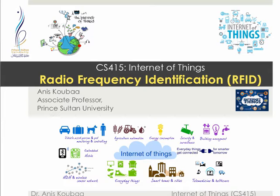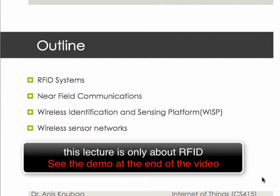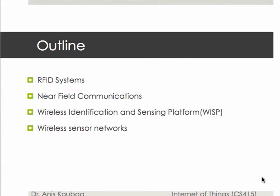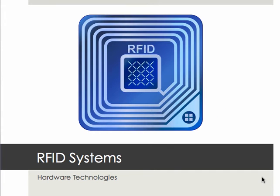In this lecture, I'm going to talk about the enabled technologies that have contributed to the emergence of the Internet of Things applications. I'm going to cover four major technologies: RFID systems, near field communications, wireless identification and sensing platform, and wireless sensor networks.